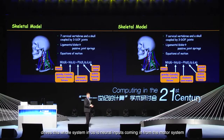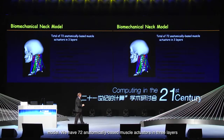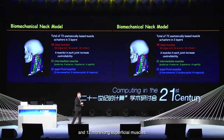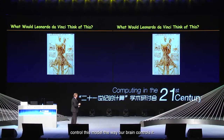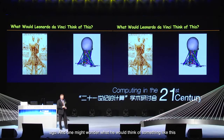What drives this whole system in us is neural inputs coming in from the motor system of the brain. So we're modeling all of this in this particular model. The challenge here is how to actuate and control this model the way our brain controls it. Here's a drawing from Leonardo da Vinci from a long time ago — one might wonder what he would think of something like this.